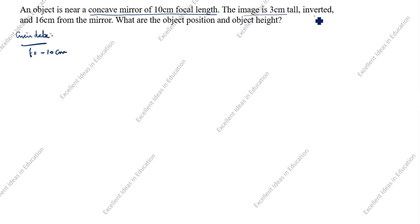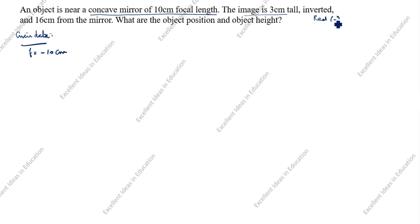The image is real and inverted — inverted means always negative — and 16 centimeter from the mirror. So image distance v is also given, and height of the image is also given. Height of image hi is minus 3 centimeter, and image distance v is minus 16 centimeter, since it is real and inverted.